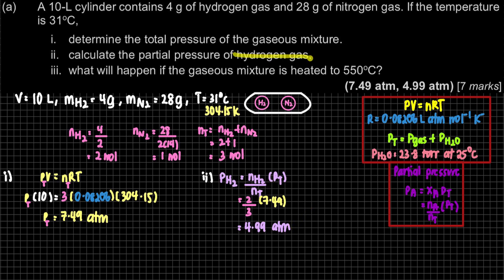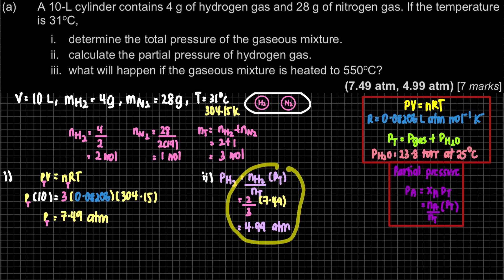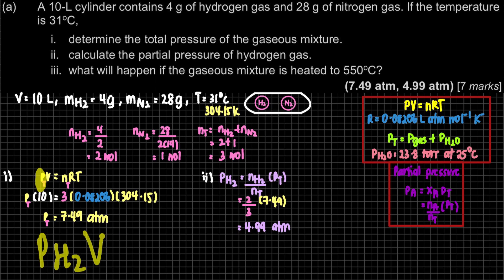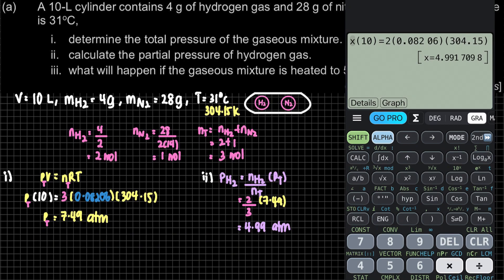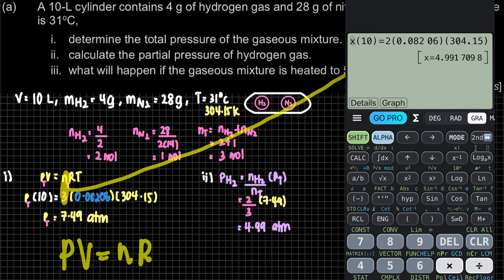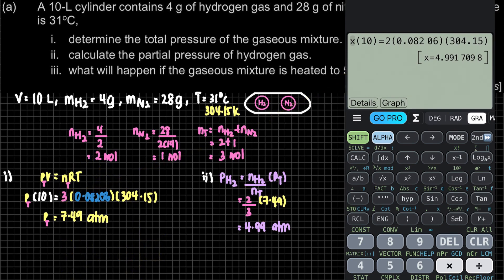Since the question only asks for hydrogen, you only find hydrogen's partial pressure. Alternatively, you can also use PV = nRT - but this time, N must be the number of moles of H₂ only, not the total 3 moles. Here N equals 2. Using this approach you can also see the answer is 4.99 atm. So you can use either the partial pressure formula or PV = nRT - both give the same result.